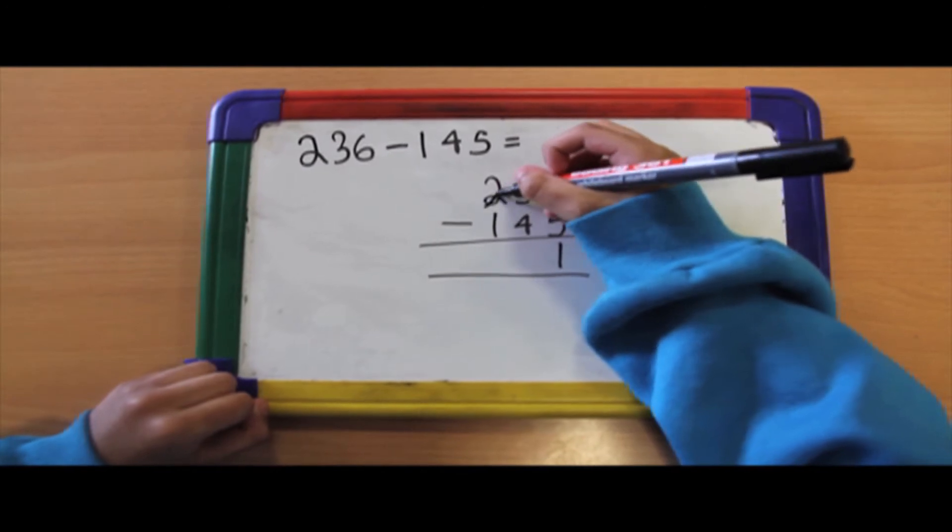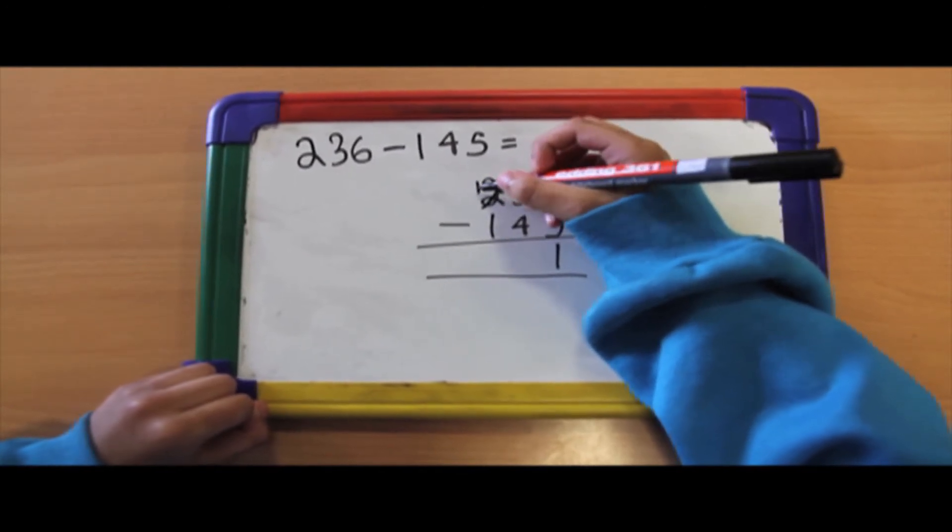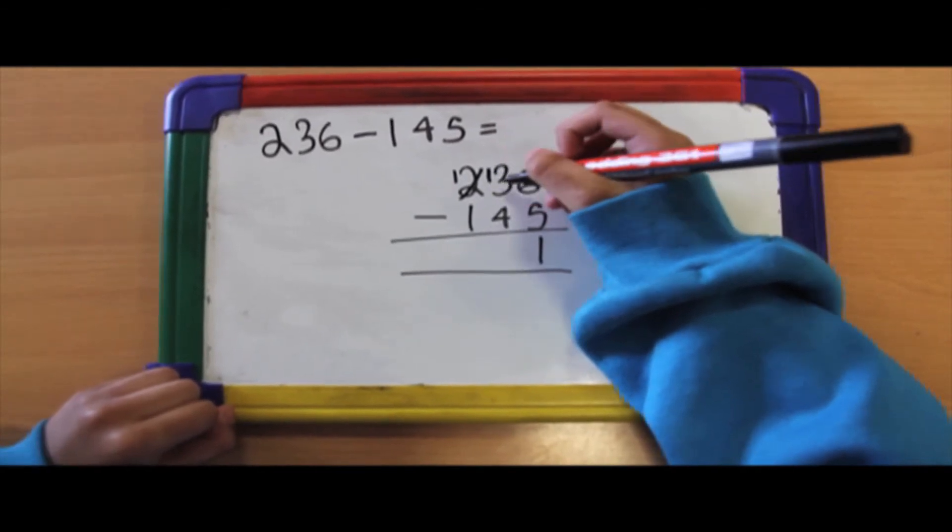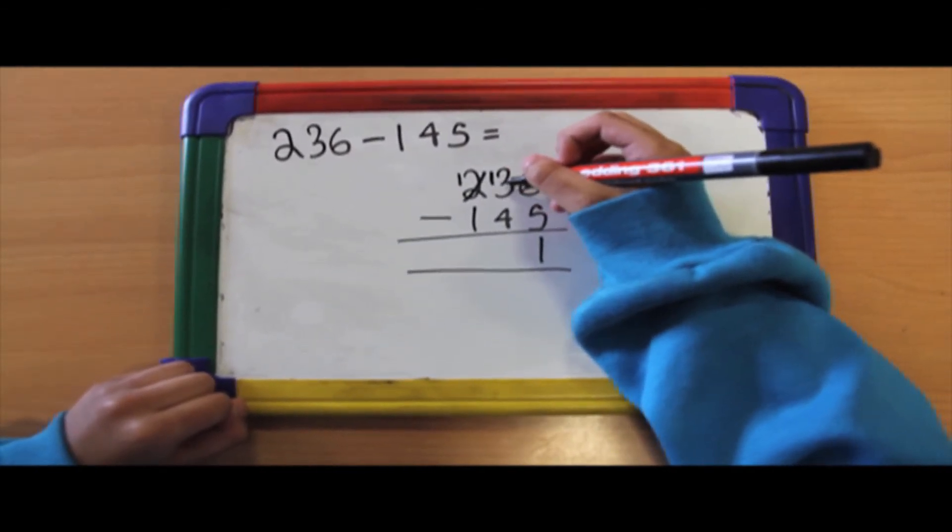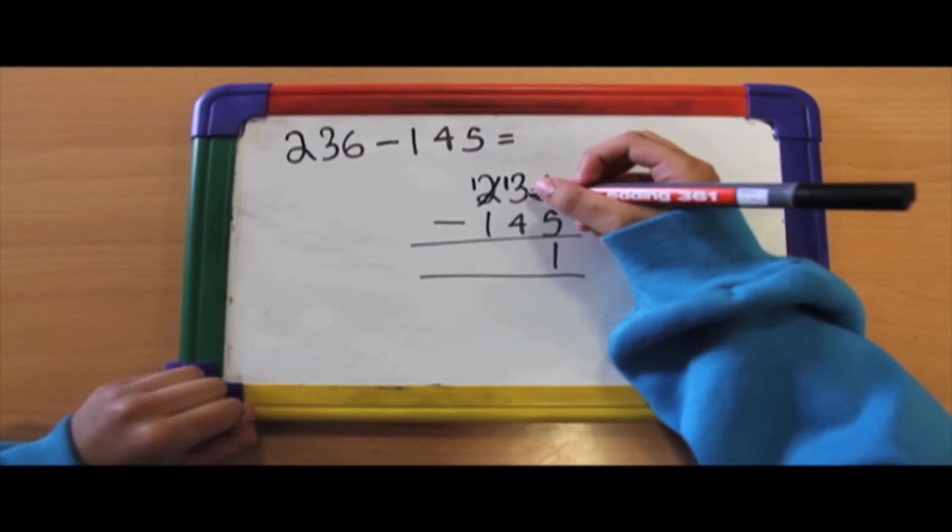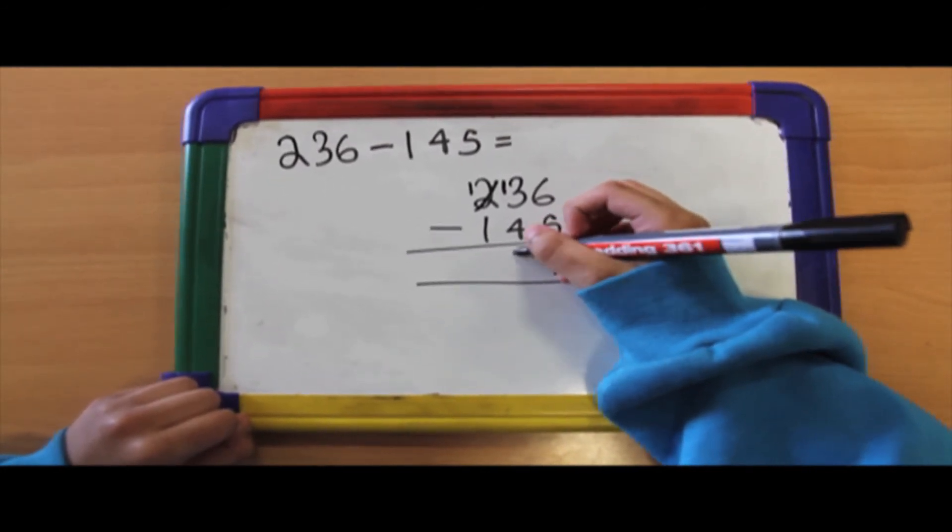So this 200 now becomes 100. So you cross it out and put a 1 for 100 to 30. So 130 take away 40 equals 90. So 9 here.